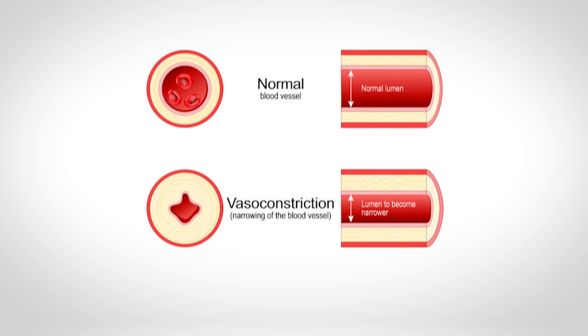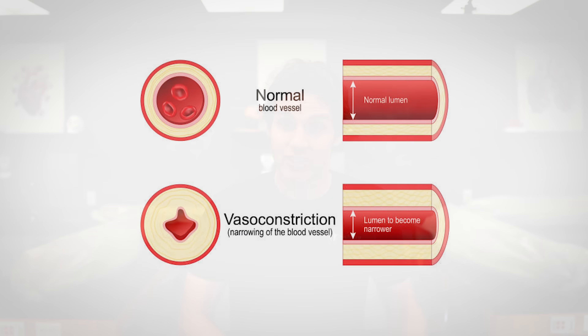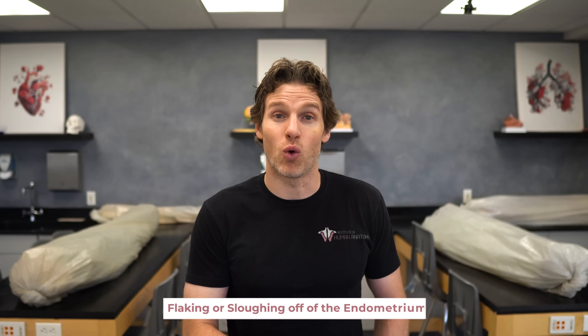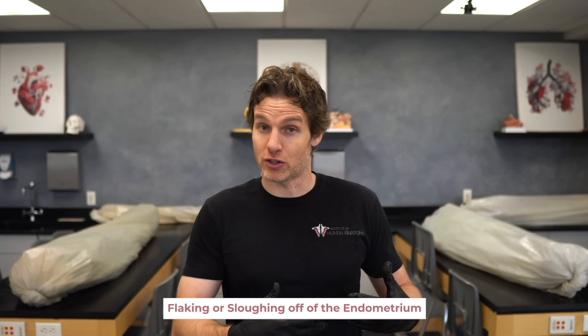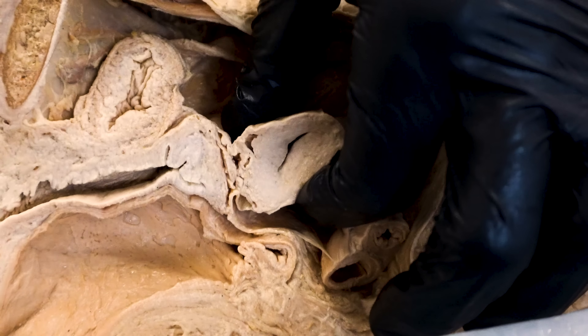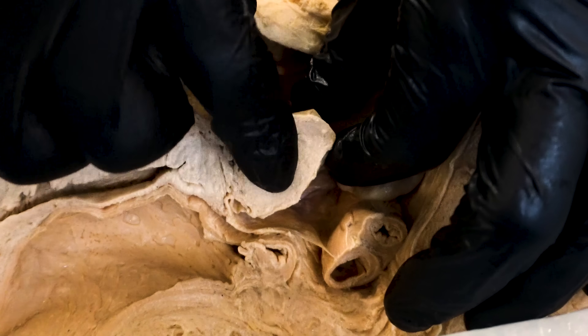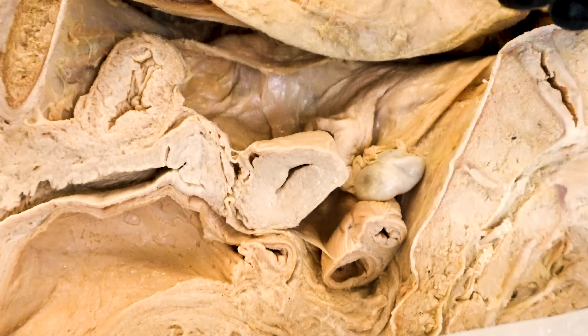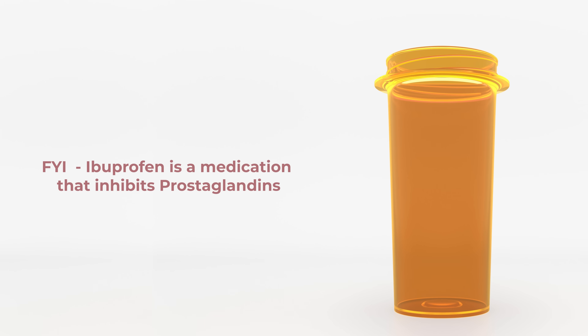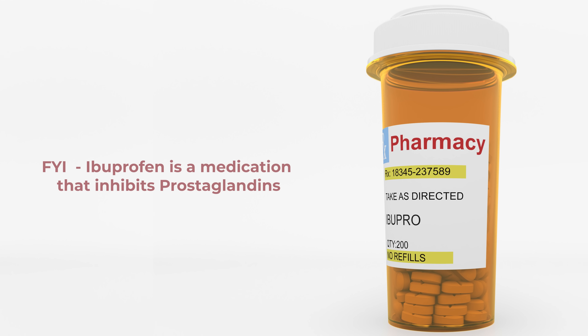This sharp decline in hormone levels triggers the release of chemicals called prostaglandins, which initiate day one of the next cycle — menstrual cramping. Prostaglandins do two things: first, they cause vasoconstriction of the blood vessels going to the uterus, which diminishes blood supply to the endometrial cells, causing them to die off and slough away. Second, they stimulate smooth muscle contractions of the uterus — all that smooth muscle in the myometrium squeezes and contracts, helping to propel the cells out of the body but also causing pain. Ibuprofen, as an FYI, is a medication that inhibits prostaglandins, which is why it can help with menstrual cramping.